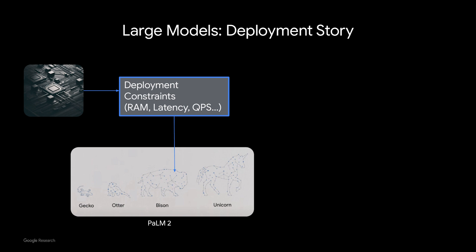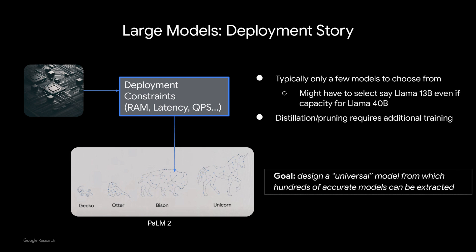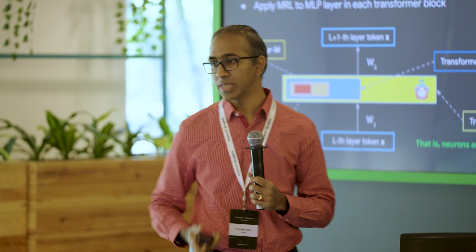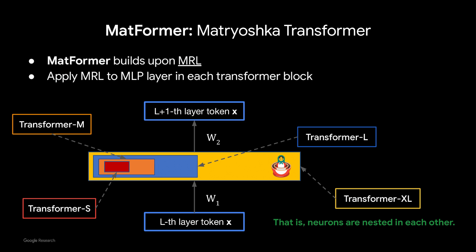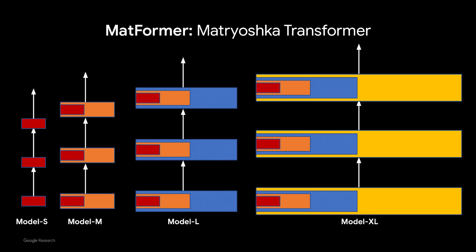The question we are asking is: can we design LLMs so that we don't have to force-fit our application into the available set of models? Can we have a universal model from which we can carve out whatever model we want for our application? That is where Matformer comes in. Matformer is a new transformer architecture where a bunch of transformer blocks are embedded within each other — for example, a transformer XL block has a transformer L block nested within it, and within that there is a transformer M block and transformer S block. We can stack these different-sized blocks together to form different-sized models.